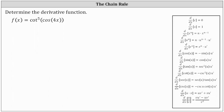We're asked to find the derivative of f of x equals cotangent to the fifth of cosine of 4x. To help us determine the derivative function, let's rewrite the function as the fifth power of cotangent of cosine of 4x.